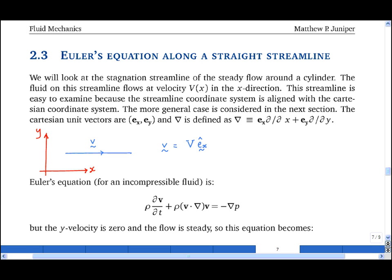Euler's equation is given here, and we note first that the flow is steady, so dv by dt is equal to zero. And secondly, we note that the y-velocity is equal to zero. So the v-dot grad term becomes, in Cartesian shorthand, capital V in the x-direction dotted with d by dx. This is just in two dimensions. I'm writing down the del operator.